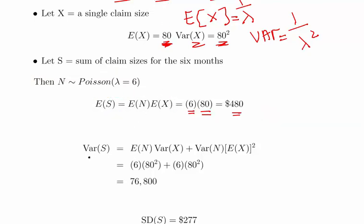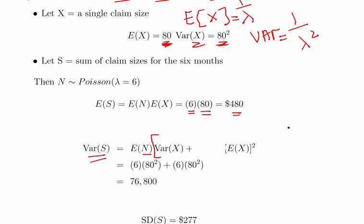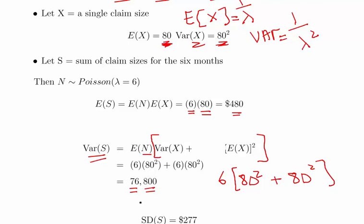Now for the variance of S: using the formula, that's the expected value of N times the variance of X plus the expected value of X squared. So it's 6 times 80 squared plus 6 times 80 squared.